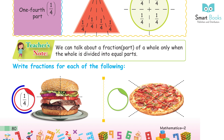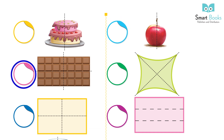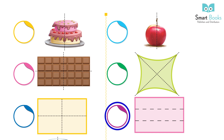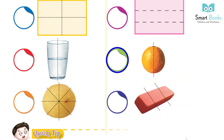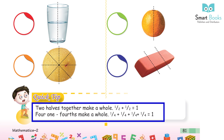Examples include: one upon four, one upon two, one upon three, one upon eight. Quick tip: two halves together make a whole — one upon two plus one upon two equals one. Four one-fourths make a whole — one upon four plus one upon four plus one upon four plus one upon four equals one.